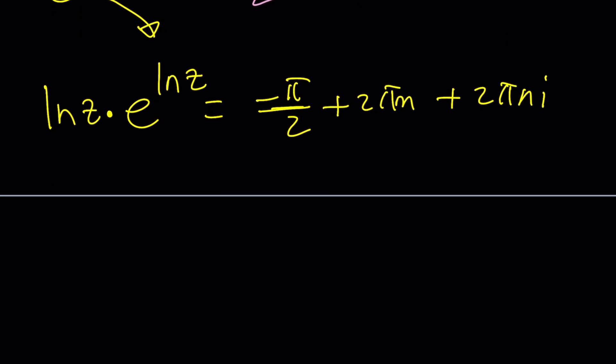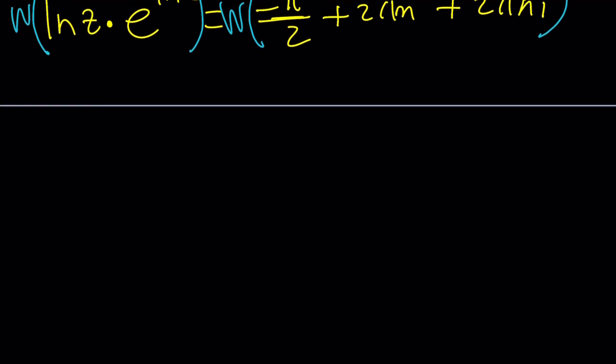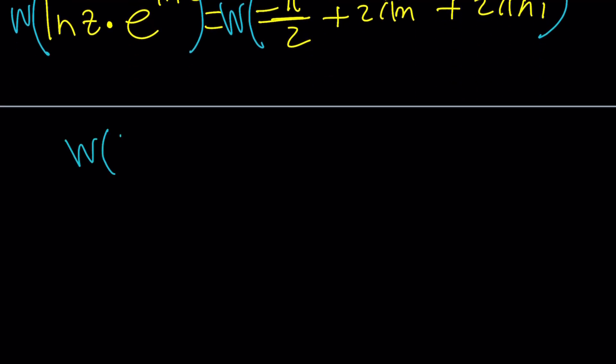Now, we can use Lambert W on both sides. Lambert W function is basically, let me tell you what it is. It acts upon t e to the t and turns it into t. So, we have a machine that turns t e to the t to t, which is called Lambert W function. In other words, it's the inverse for t e to the t. Nice, because we don't really have an explicit way of expressing it, except for just calling it Lambert W.